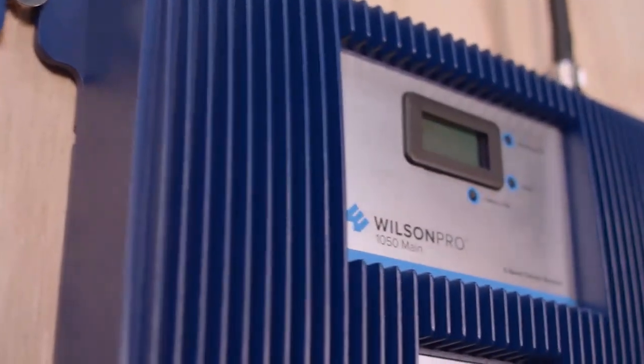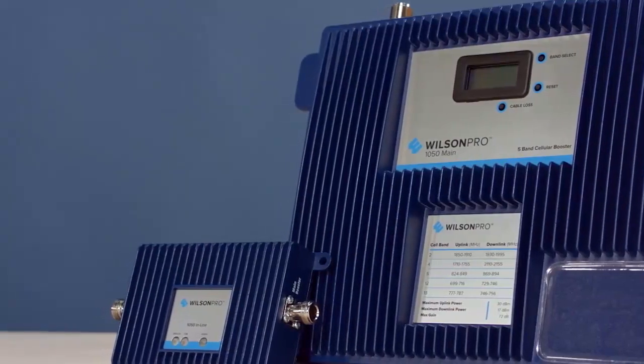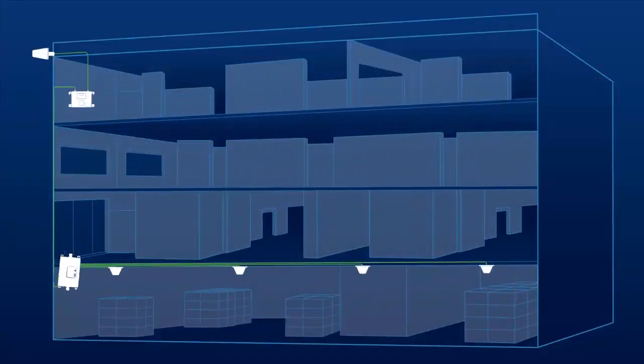The Pro 1050 is also modular and can be configured in any number of ways to fit your installation, as long as you follow this layout. The inline booster must be connected between the indoor broadcast antenna, or antennas, and the main amplifier unit.